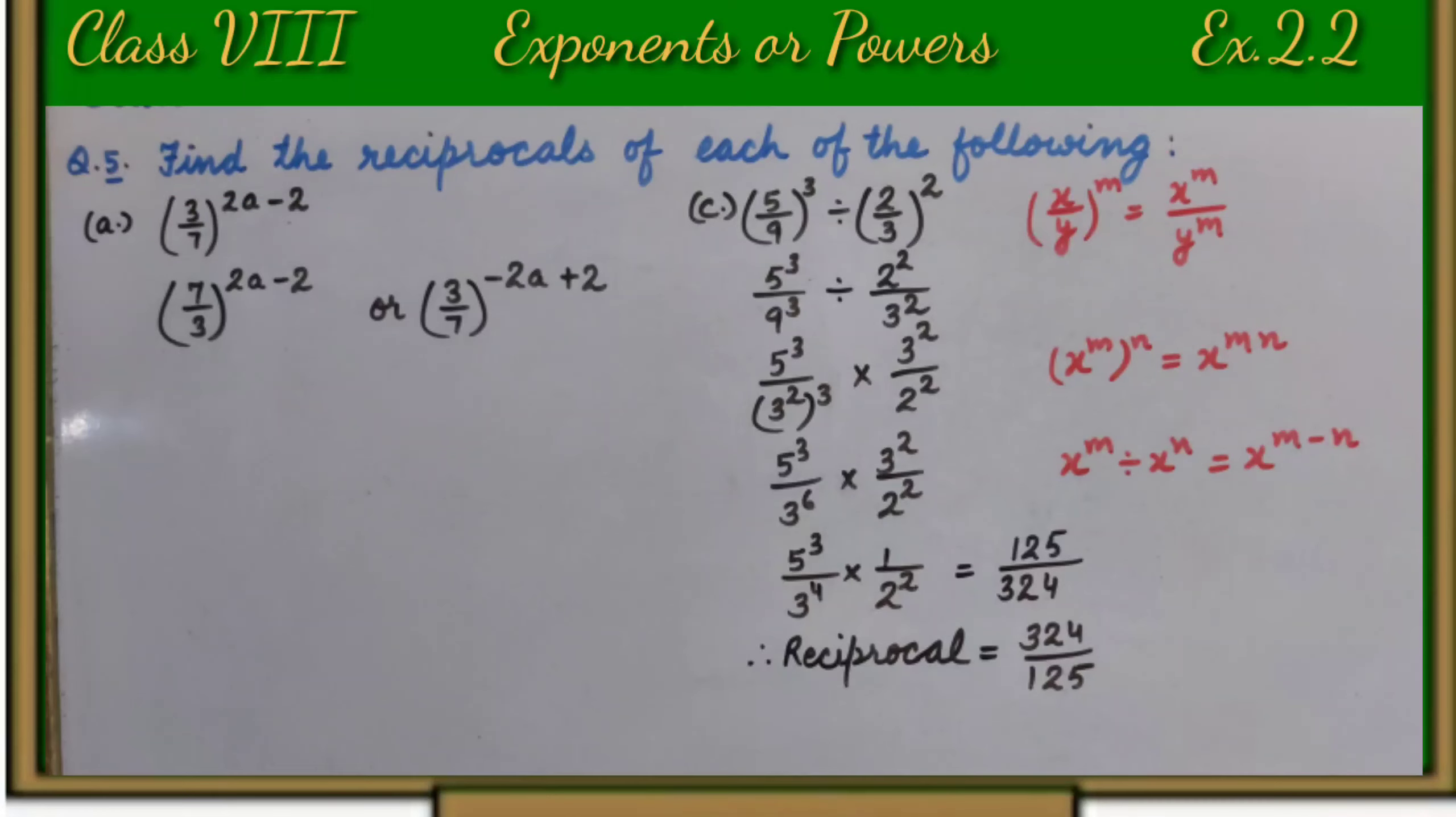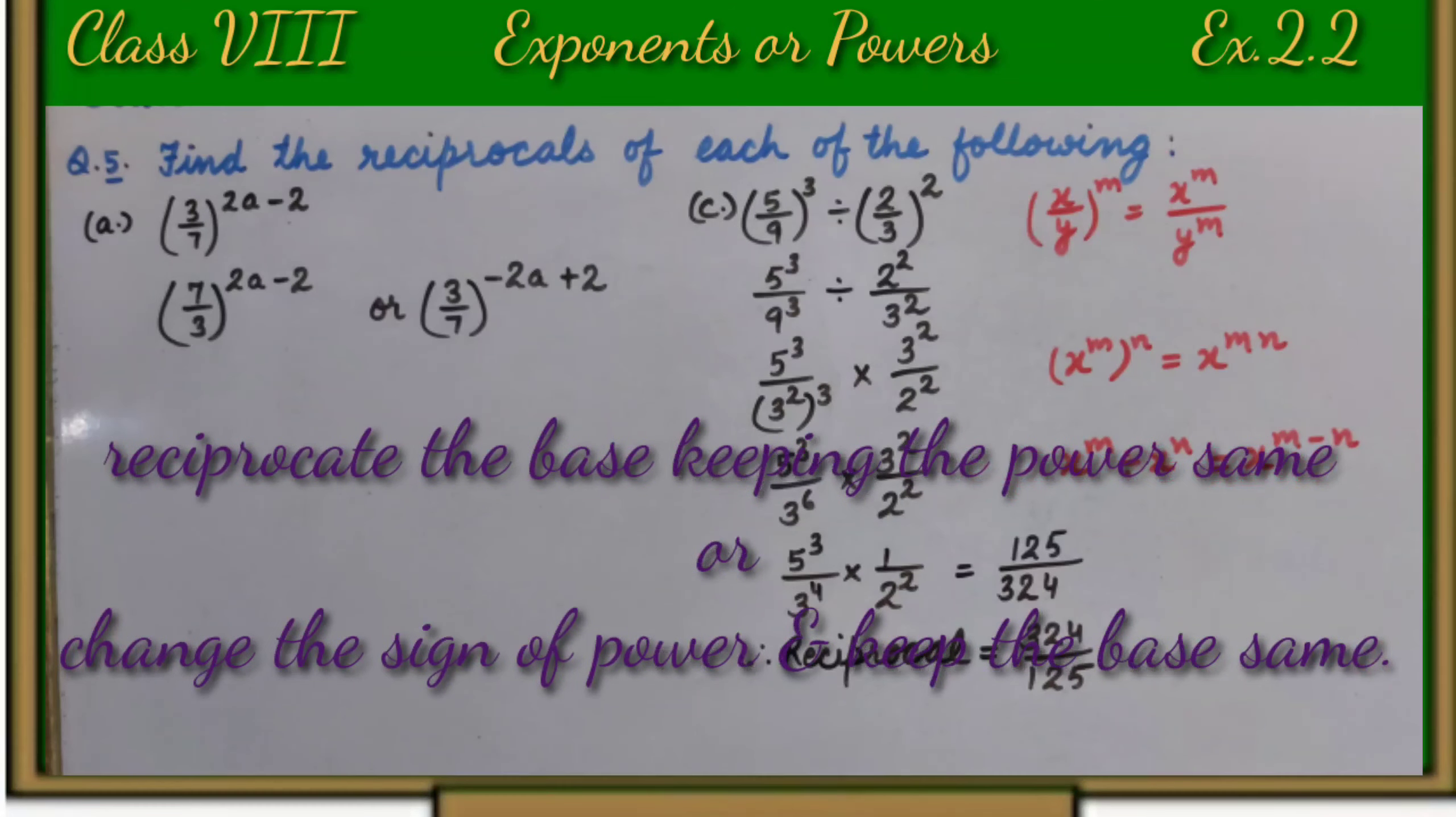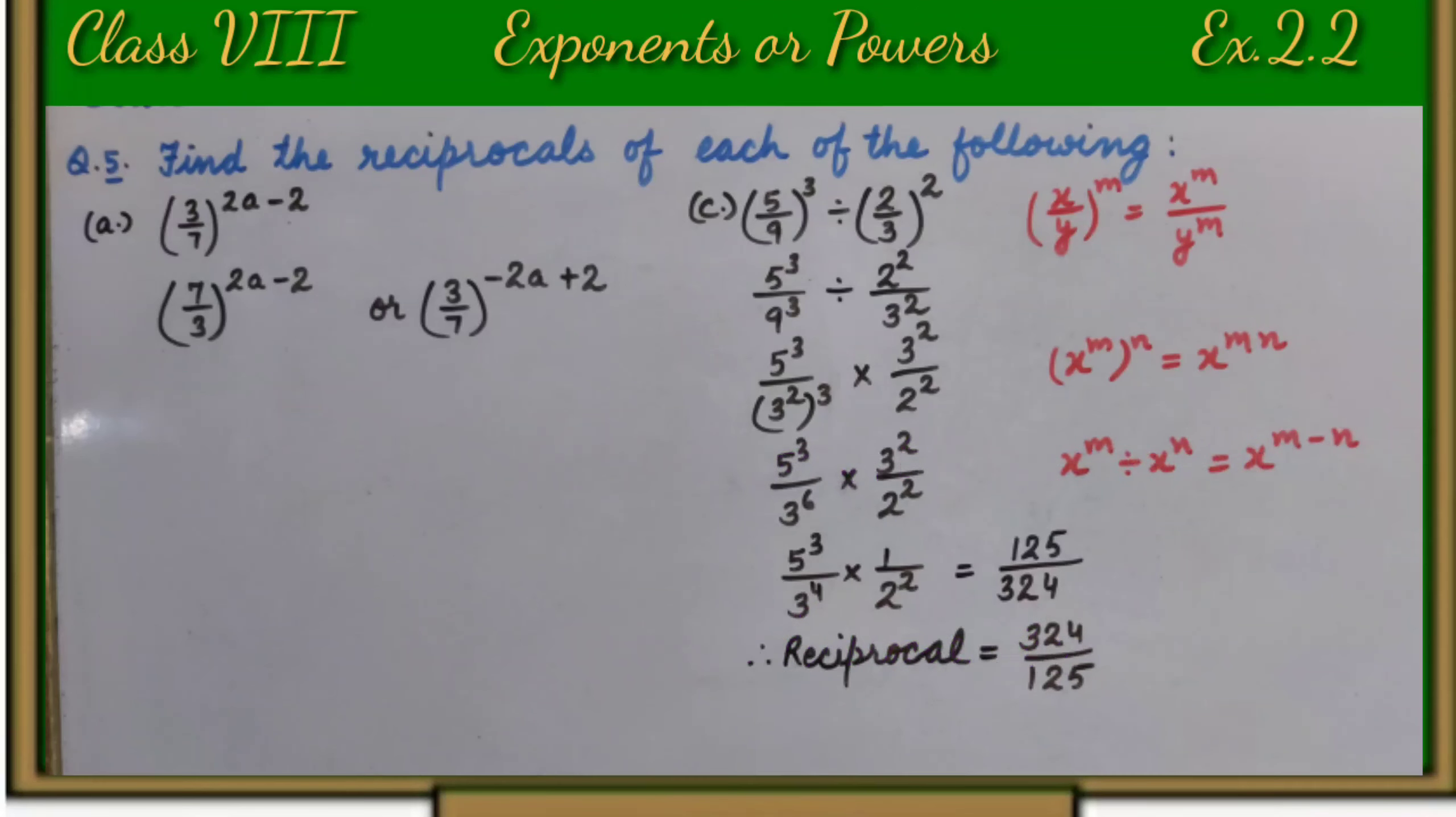As we know, when we find out the reciprocal of any exponential form, either we reciprocate the base keeping the signs of power same, or we keep the base same and change the sign of power.